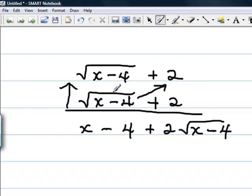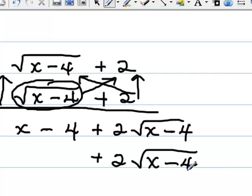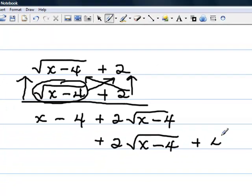the bottom row, and I've multiplied this one times both of these on the top. Now I have to multiply the 2 times both of these. So the 2 times this expression is another 2 times the square root of x minus 4. When I take 2 times 2, I get 4.